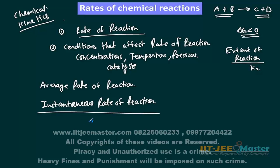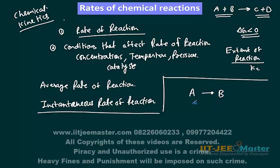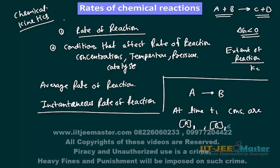So how do we measure the rate of reaction? The simplest method is to see how the concentration is varying. Suppose we have a simple reaction: A → B. A is the reactant and B is the product. So A will disappear and B will appear — the production of B will take place. At time T1, the concentration of A is A1 and the concentration of B is B1.